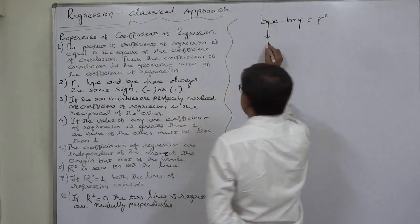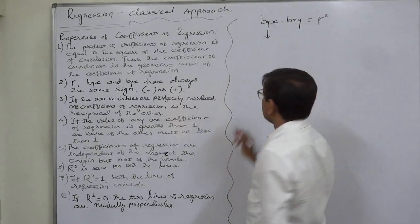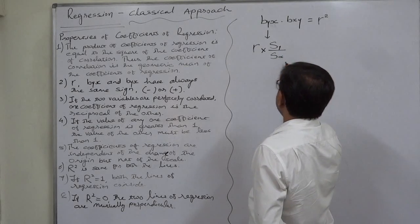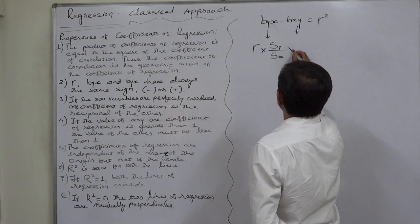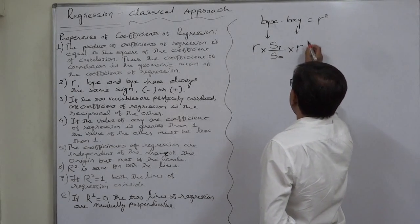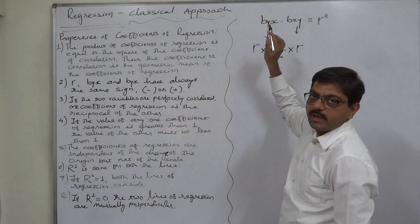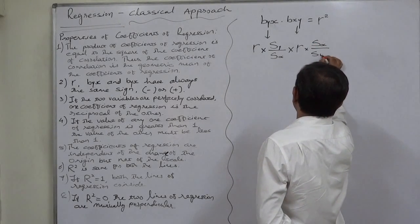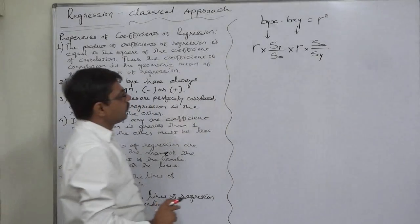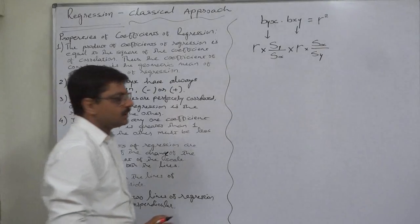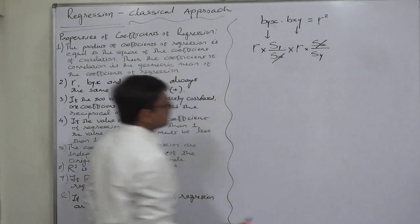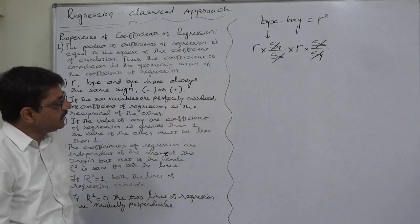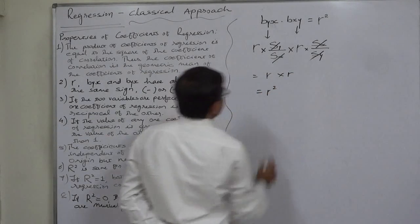By definition, the formula of b_yx — the coefficient of regression of Y on X, where Y is the dependent variable and X is independent — is the product of the coefficient of correlation and the ratio of the standard deviation of the dependent variable to the standard deviation of the independent variable. Similarly, b_xy, where X is dependent and Y is independent, equals the coefficient of correlation into the standard deviation of X to the standard deviation of Y. Since all factors are in multiplication, we can cancel s_x with s_x and s_y with s_y.